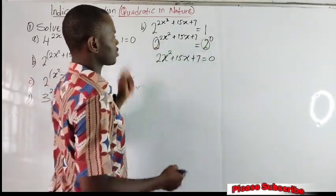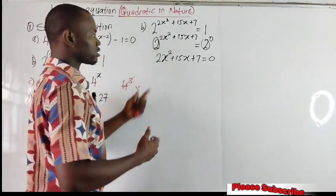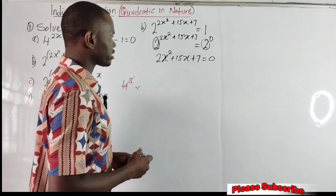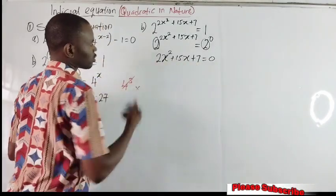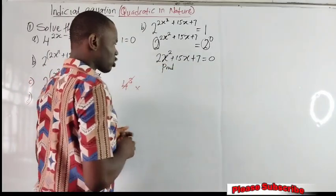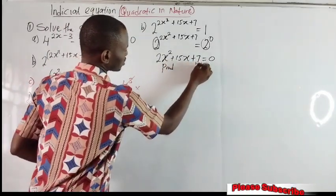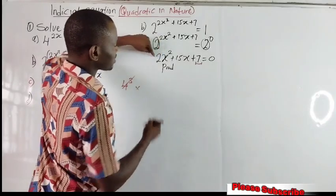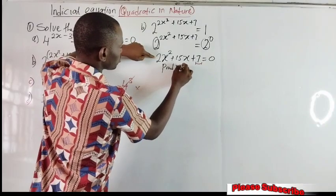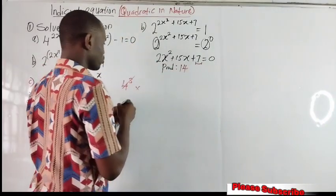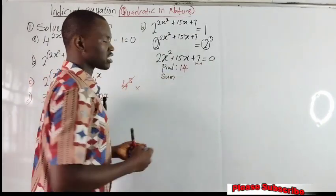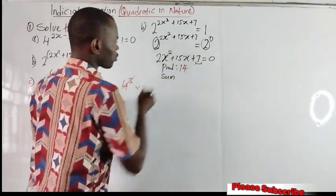I can now equate their powers. So the powers give us: 2x squared plus 15x plus 7 equal to 0. We already have our quadratic equation, so we go straight to simplifying it. Get your product first: the coefficient of x squared is 2, so multiply 2 by the constant 7 to get the product, which is 14. Then get your sum, which is the coefficient of x, that is 15.